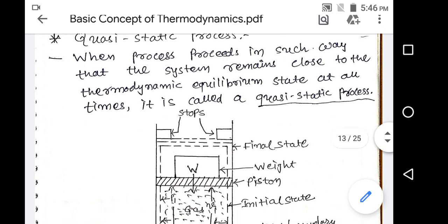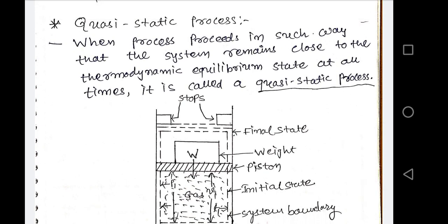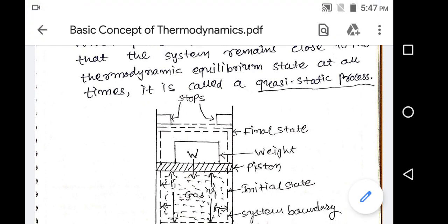Now this is the statement of the definition. We understand it through some examples. The process proceeds in such a way that the system remains very close to thermodynamic equilibrium. Thermodynamic equilibrium means there is no change in pressure, no change in temperature, no change in chemical composition, or we can say no change in all the macroscopic properties of the system. It is known as thermodynamic equilibrium.